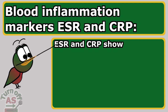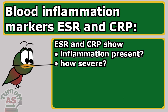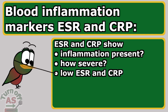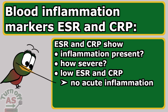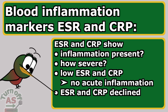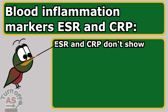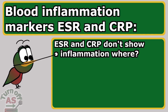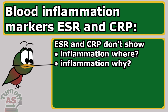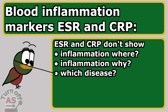ESR and CRP show the presence and severity of inflammation and disease activity. Low ESR and CRP values probably show the patient doesn't have acute inflammation. If ESR and CRP were previously high and become lower, it shows lower disease activity and the treatment may be working. However, ESR and CRP don't show where the inflammation is or what's causing it, so they don't help diagnose a specific disease, since many conditions can raise ESR and CRP.